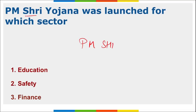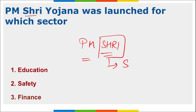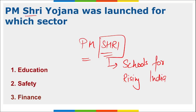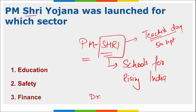Let's start with PM Shri Yojana. PM Shri stands for Pradhan Mantri Schools for Rising India. This scheme was recently announced by Prime Minister Narendra Modi and was launched on the occasion of Teachers' Day, which is observed on 5th September in memory of Dr. S. Radhakrishnan, who was the first Vice President and second President of India.